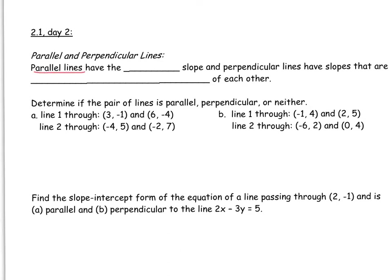Lines that are parallel have the same slope. Lines that are perpendicular have slopes that are negative reciprocals of each other. We flip the slope and change its sign to make it perpendicular.